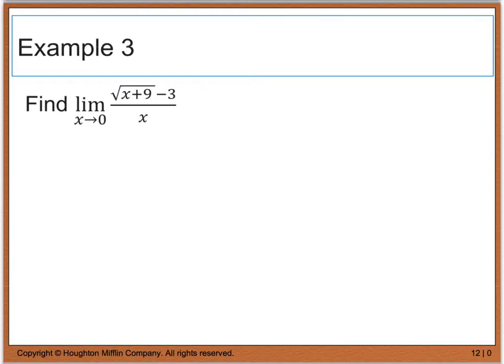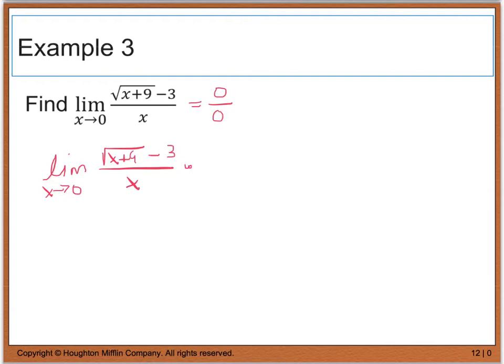Again, we're going to try direct substitution, which in this case, 0 plus 9 is going to give me 9. If I take the square root of 9, it gives me 3, and 3 minus 3 is 0. And if I plug a 0 in for x, I get 0. 0 divided by 0 is the indeterminate form, which tells me I have to do something else. So to rationalize the numerator, I'm going to take the limit as x approaches 0 of the square root of x plus 9 minus 3 divided by x. It's kind of like the complex conjugate when we're dealing with complex numbers, but this time I'm going to multiply by the square root of x plus 9 plus 3, and divide by the same thing.